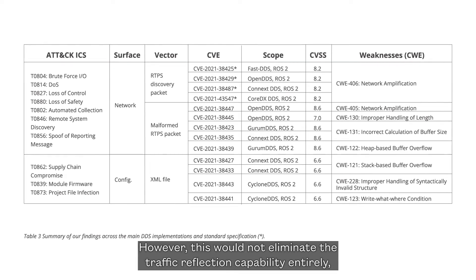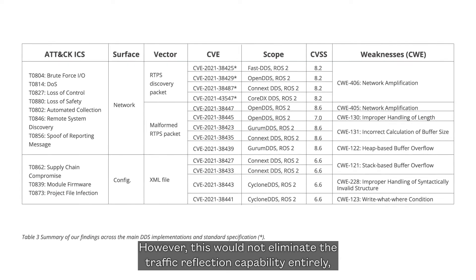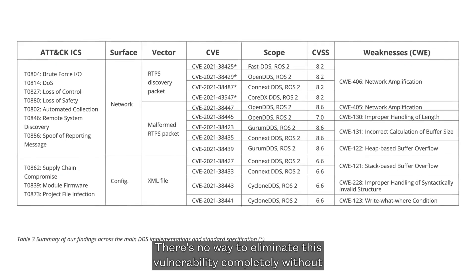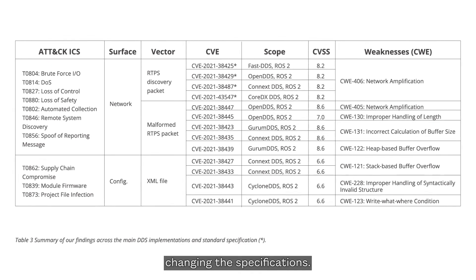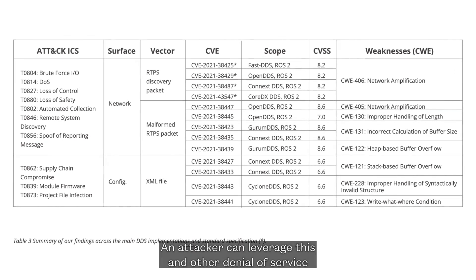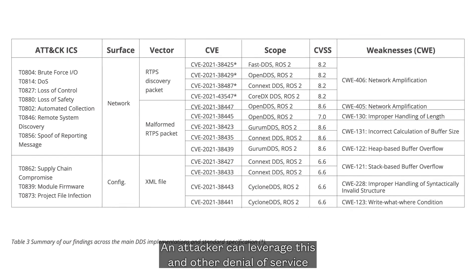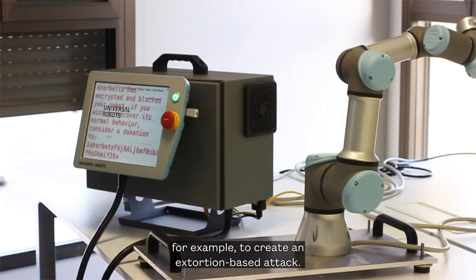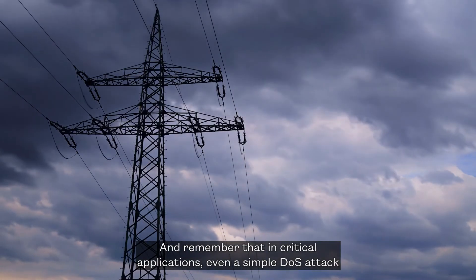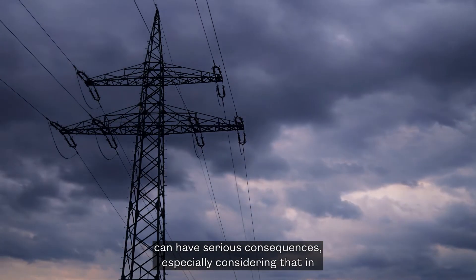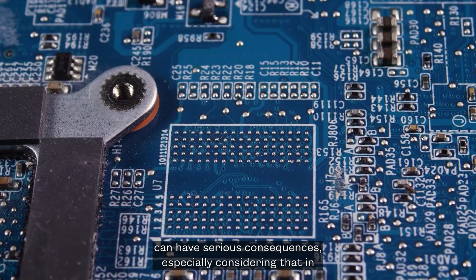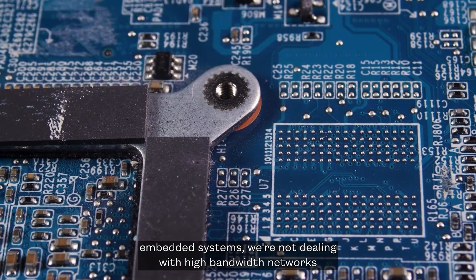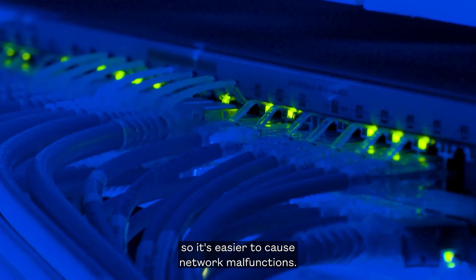However, this would not eliminate the traffic reflection capability entirely, which could be abused by an attacker. There is no way to eliminate this vulnerability completely without changing the specifications. An attacker can leverage this and other denial-of-service vulnerabilities in various ways — for example, to create an extortion-based attack. And remember that in critical applications, even a simple DDS attack can have serious consequences, especially considering that in embedded systems we are not dealing with high bandwidth networks, so it is easier to cause network malfunctions.